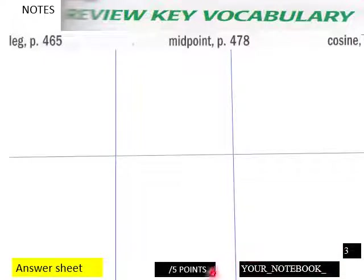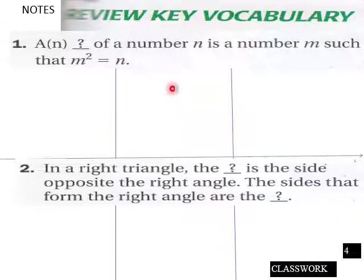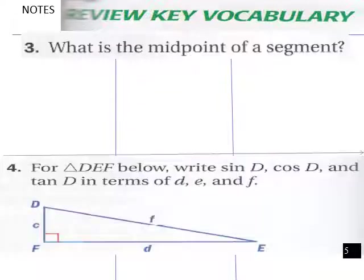Page three, more vocabulary: leg, midpoint, and cosine. This goes in your notebook, students, and five points here for page three. Page four, we got a question here. A blank of a number M is a number M such that M² equals M, so respond to that. And then down here, in a right triangle the blank is the side opposite the right angle. The sides that form the right angle are the blank. You got five points here for page four.